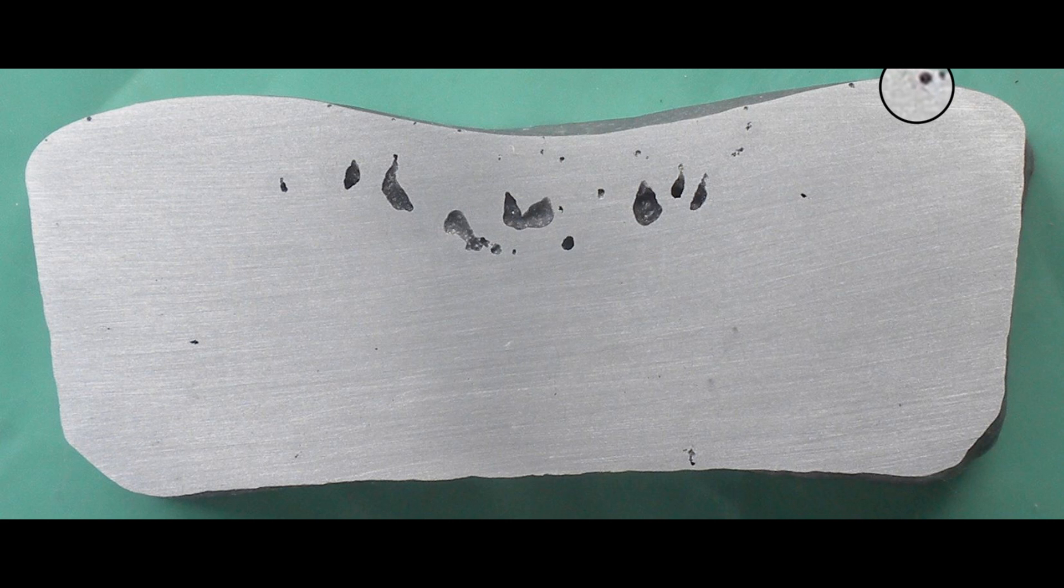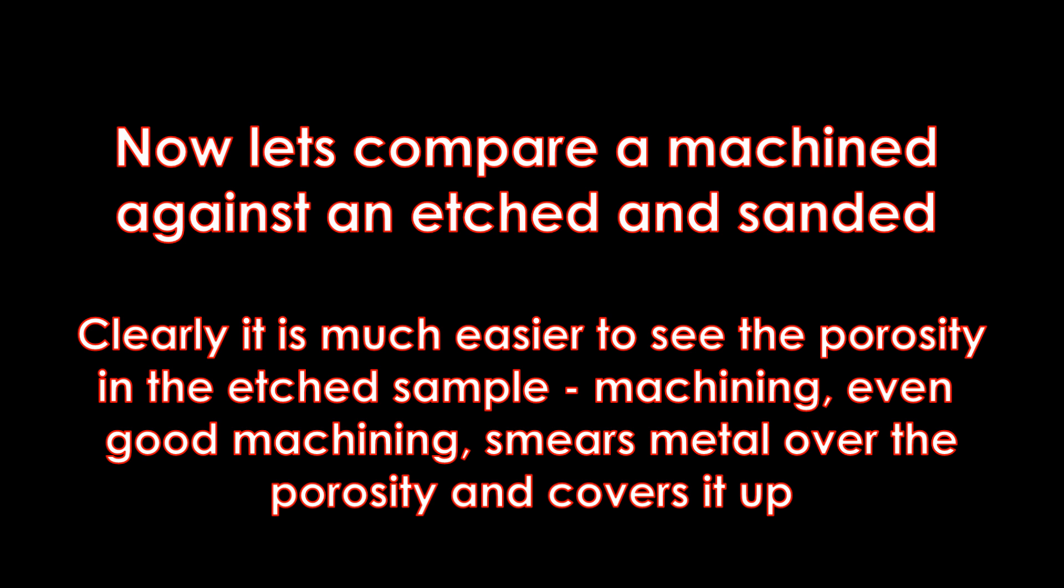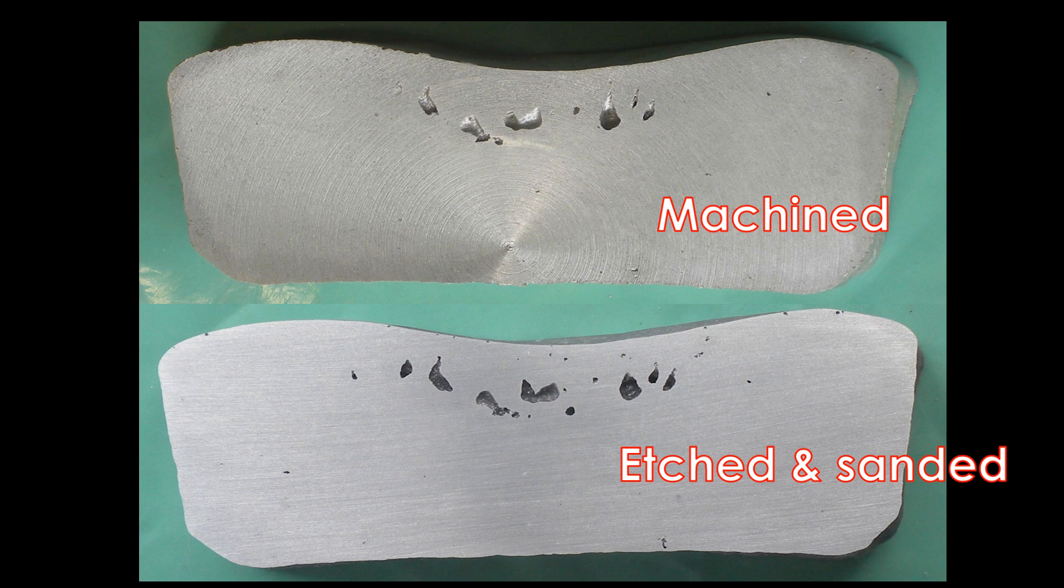Now let's compare a machined against an etched and sanded. Clearly it is much easier to see the porosity in an etched sample. Machining, even good machining, smears metal over the porosity and covers it up.